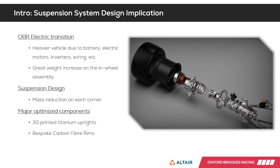Consequently, the main objective of the department was to compensate for the extra mass by drastically reducing the weight of the suspension components. The main weight reduction comes from the topology-optimized uprights, saving up to 30 percent on each corner, and the bespoke composite rims with a weight reduction of more than 50 percent. I will now hand it to my colleague Raquel to go into more depth on the upright designs.